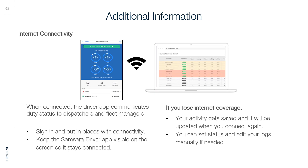Additional Information — Internet Connectivity: When connected, the Driver App communicates duty status to dispatchers and fleet managers. Sign in and out in places with connectivity. Keep the Samsara Driver App visible on the screen so it stays connected. If you lose internet coverage, your activity gets saved and will be updated when you connect again. You can set status and edit your logs manually if needed.